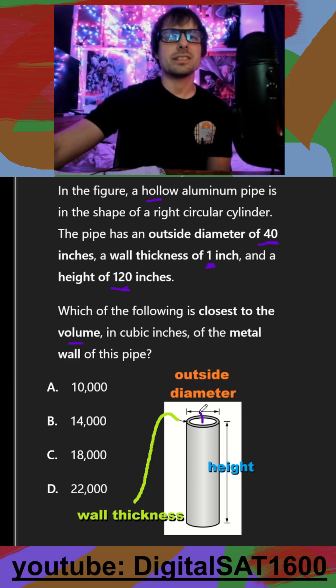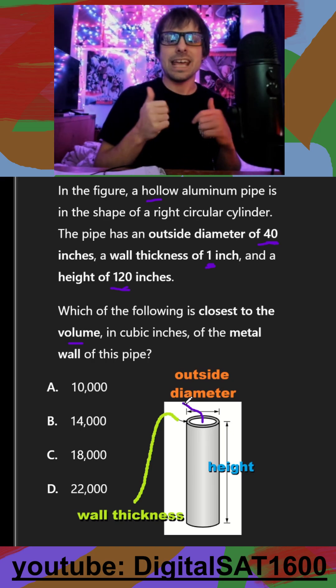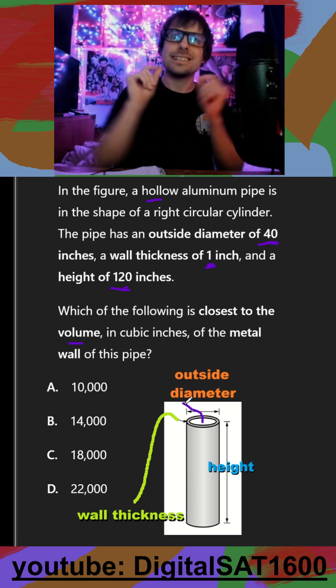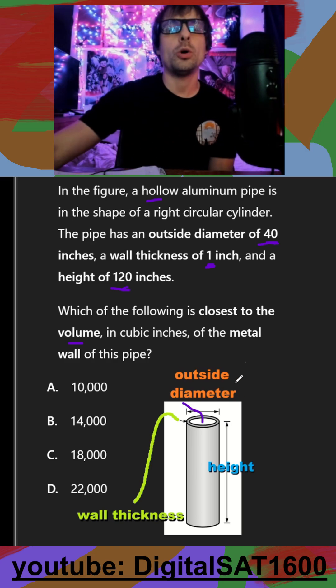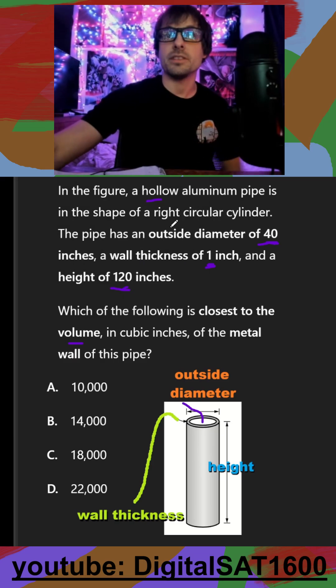So what's happening here is we have this empty space that is technically a smaller cylinder. And if I subtract that from the volume of the entire cylinder as if it was whole, that's going to give me the volume of just that thin wall. So on our equation sheet, the volume of the cylinder,